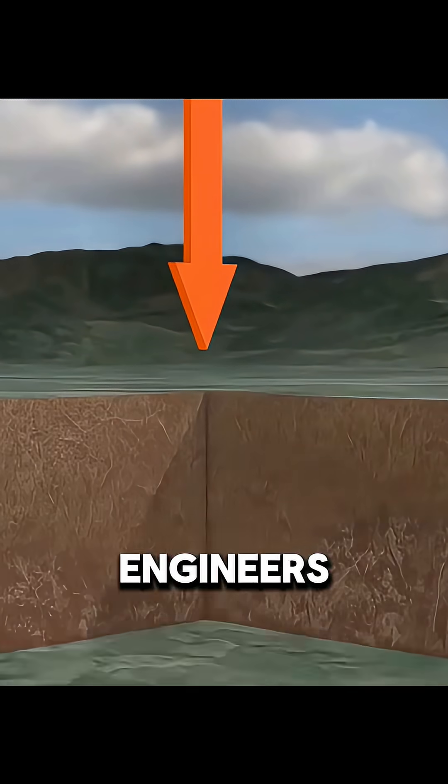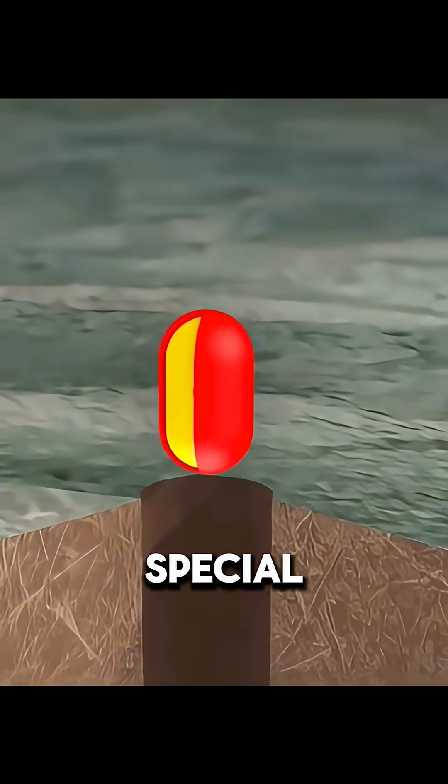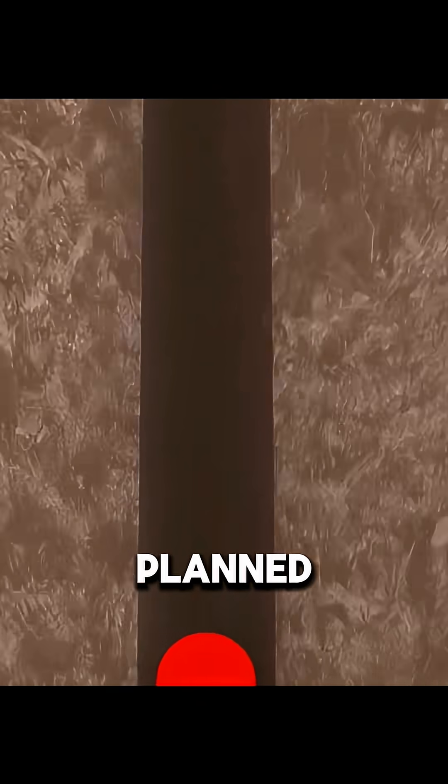Once the site is chosen, engineers drill a vertical shaft straight down from the surface, usually 200 to 800 meters deep. A nuclear device about 3 meters in diameter is put into a special container and lowered to the planned depth, then fixed in place.